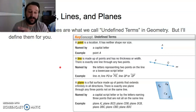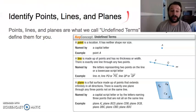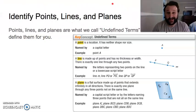A plane is a flat surface made up of points that extends infinitely in all directions. So there's exactly one plane through any three points not on the same line. A plane is a flat surface.